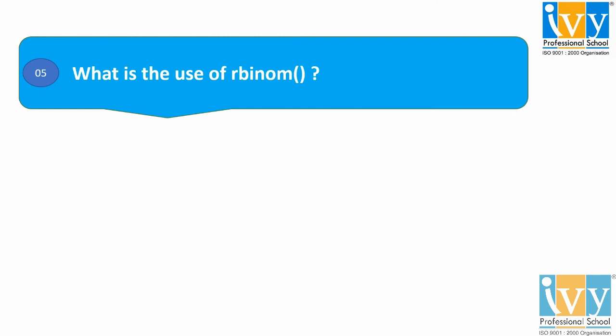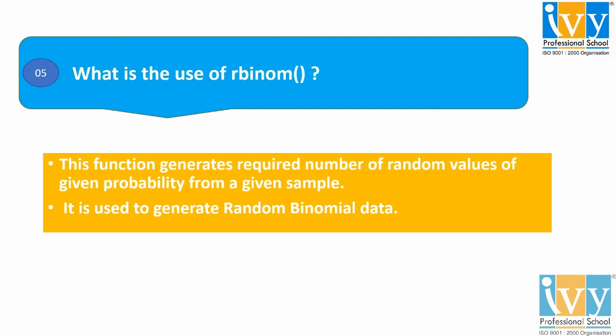Moving to the last and fifth question: What is the use of the rbinom() function? The function generates a required number of random values of a given probability from a given sample. The function is used to generate random binomial data. We can also say that it can be used to simulate the outcome of a Bernoulli trial — this is a fancy statistical word for flipping coins. We can use it to calculate the number of successes in a set of pass or fail trials with a success estimated at a probability P.